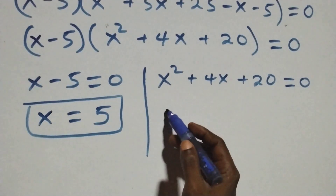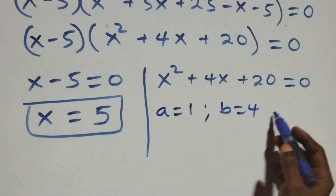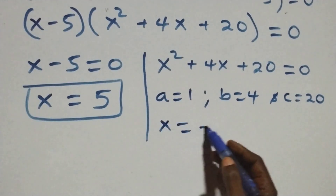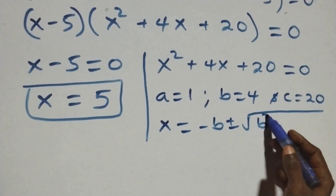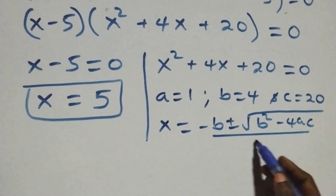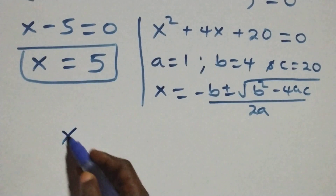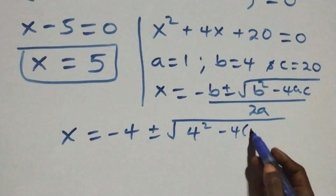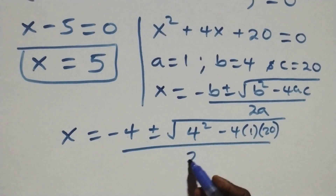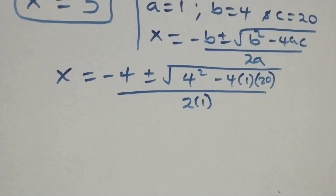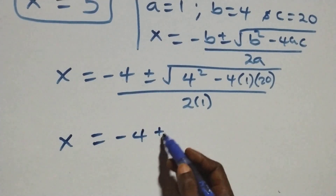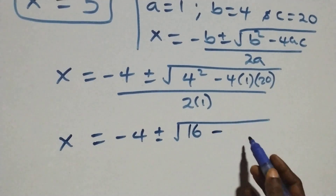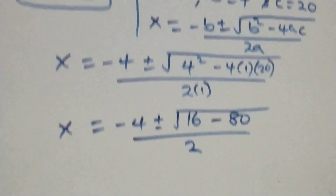For the quadratic equation x squared plus 4x plus 20 equals zero, we have a equals 1, b equals 4, and c equals 20. Applying the quadratic formula x equals minus b plus or minus square root of (b squared minus 4ac), all over 2a, we get x equals minus 4 plus or minus square root of (16 minus 4 times 1 times 20), all over 2.